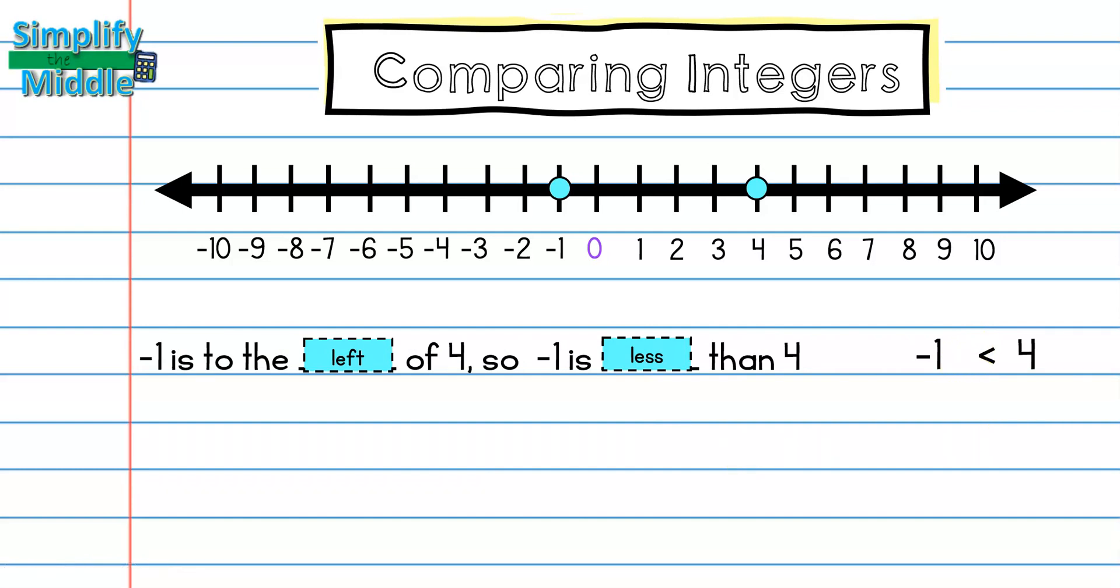I can also compare these two numbers by looking at 4. So when I'm looking at 4, I see that it is to the right of negative 1. So 4 is greater than negative 1. And this is what my comparison statement looks like. These two comparisons are talking about the same set of numbers.